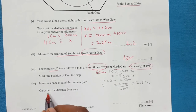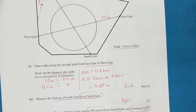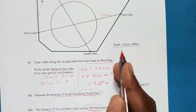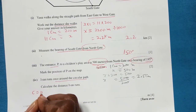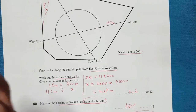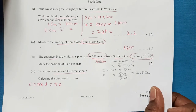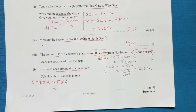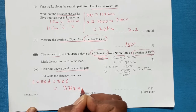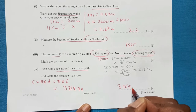Part 4: Yvonne runs once around the circular path. We need to calculate the circumference. The circular path has a diameter of approximately 6 centimetres on the map. Circumference equals π times D, which is π × 6. Converting using the scale: 6 cm × 200 = 1200 metres diameter. Circumference = π × 1200 ≈ 3769.99 metres.